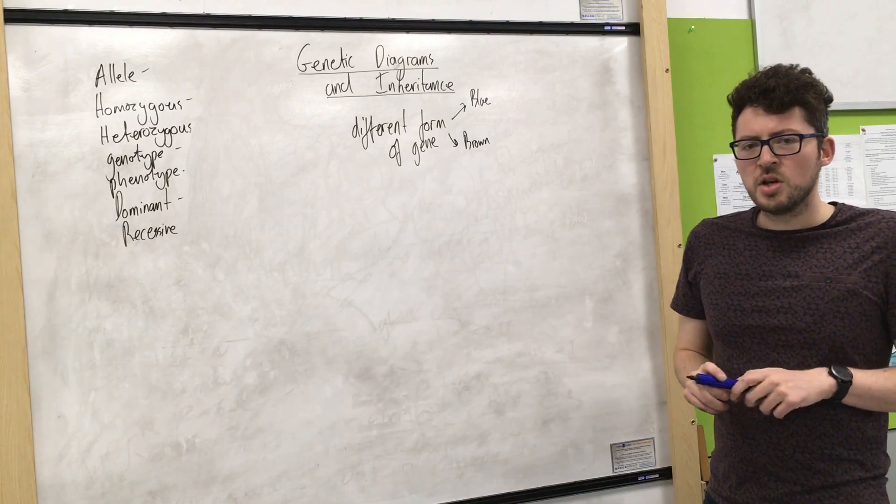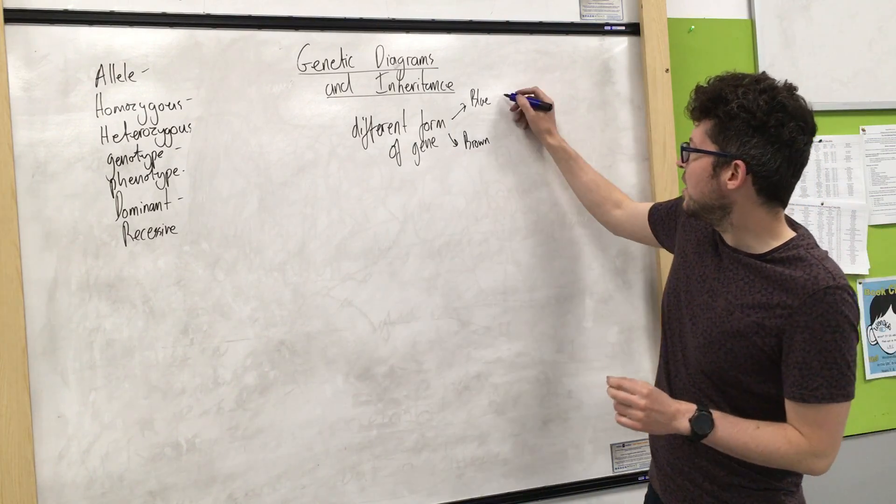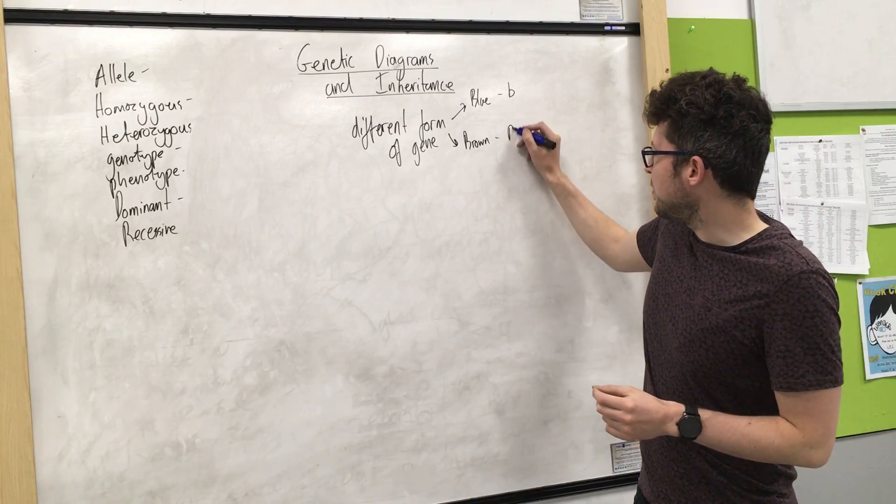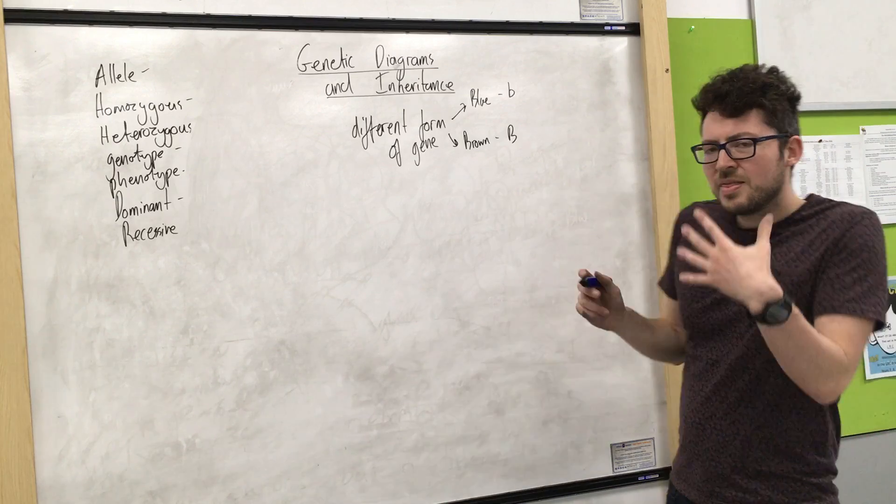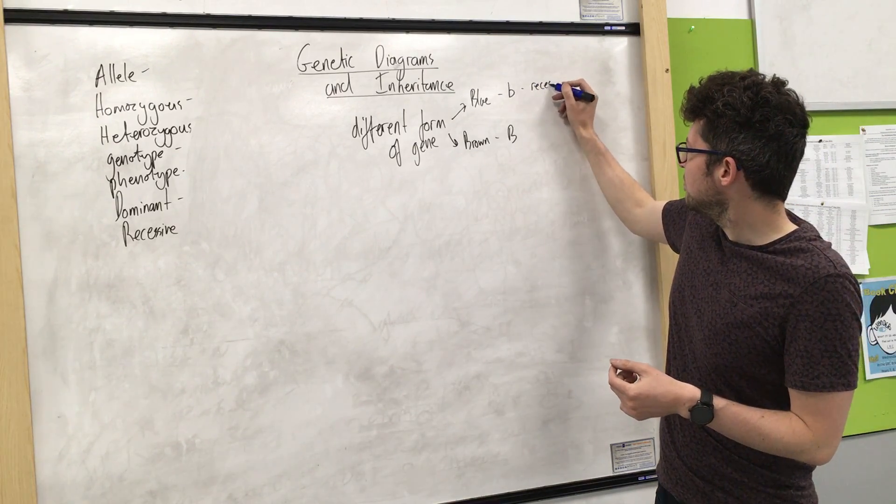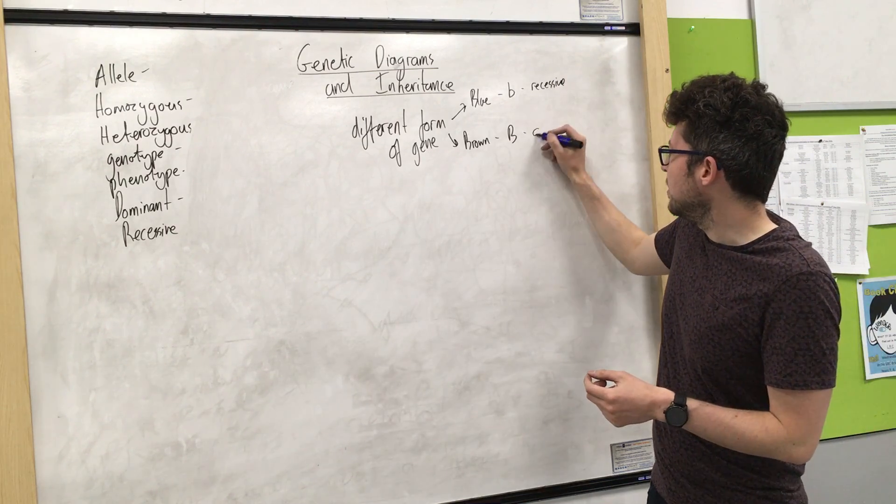But when we're drawing diagrams we use letters to indicate it. So we use a small b to represent blue and a large B to represent brown. That's because blue is recessive and brown is dominant.